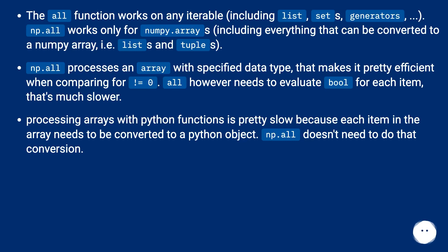Processing arrays with Python functions is pretty slow because each item in the array needs to be converted to a Python object. np.all doesn't need to do that conversion.